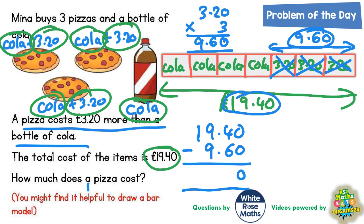So £19.40 subtract £9.60. Zero take zero is zero. Four take away six we can't do, so we borrow from the nine. The nine becomes an eight, and the one we borrowed makes this four into fourteen. Fourteen take away six is eight. Eight take away nine we can't do, so borrow from the one, and that becomes zero, and the one we borrowed makes the eight into eighteen. Eighteen take away nine is nine. So it's just going to be £9.80.